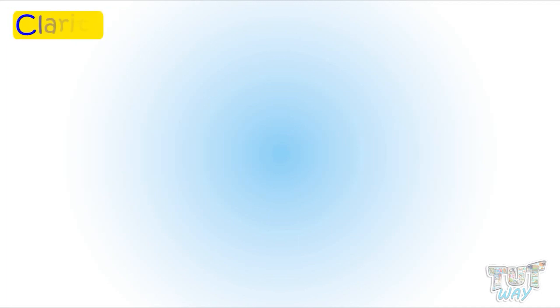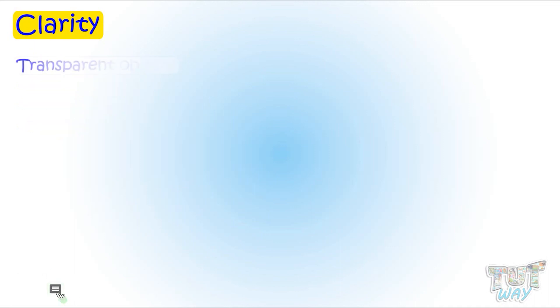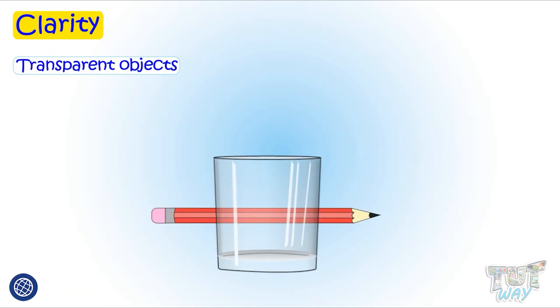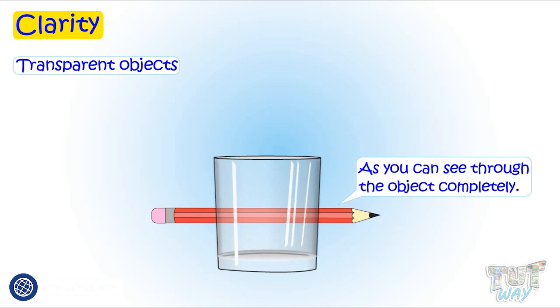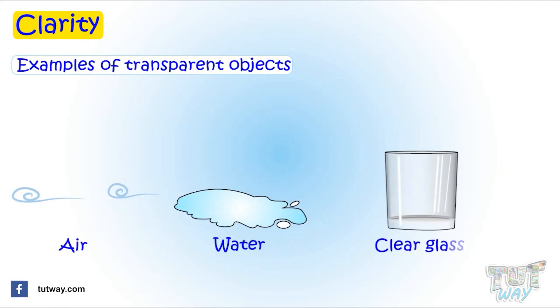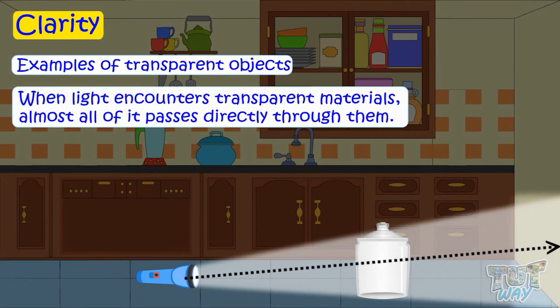Now let's learn another property: clarity. Clarity can be of three types — transparent, translucent, or opaque. An object that you can see through completely is called transparent. Materials like air, water, and clear glass are called transparent. When light encounters transparent materials, almost all of it passes directly through them.